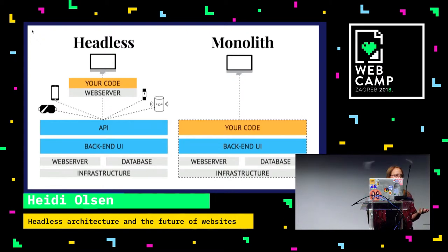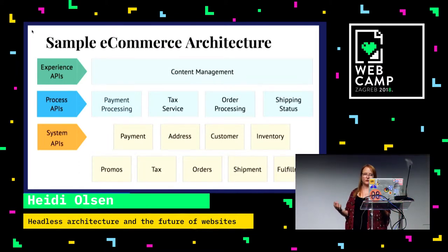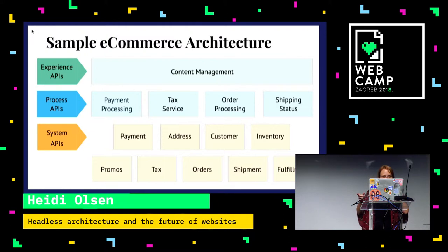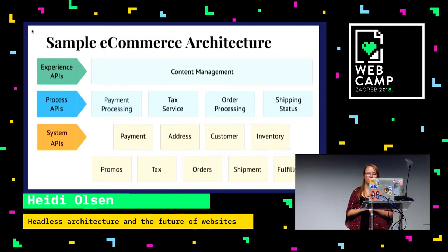Whereas in a monolithic system, everything is encompassed in one giant chunk — your presentation code is connected to your back-end UI and there are no exposed APIs, so it's really hard to port that data to other channels. When we're talking about APIs in a sample e-commerce architecture, you have experience APIs for content management, process APIs for payment processing and shipping status, and system APIs where data is stored but can be queried and mutated — things like payment information, customer information, and inventory.